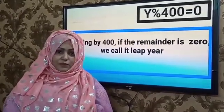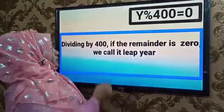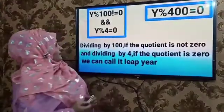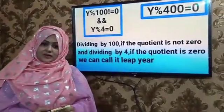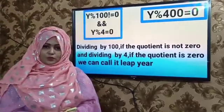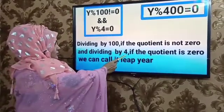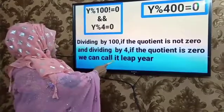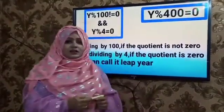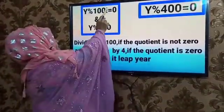Dividing by 400: if the remainder is 0, then we call it a leap year — here Y is year, Y mod 400. If after dividing by 400 it does not become 0, there is another compound condition: dividing by 100, if the remainder is not 0, AND dividing by 4, if the remainder is 0, we call it a leap year. Here Y is year, and this is the modulo operator, and this is the AND operator.